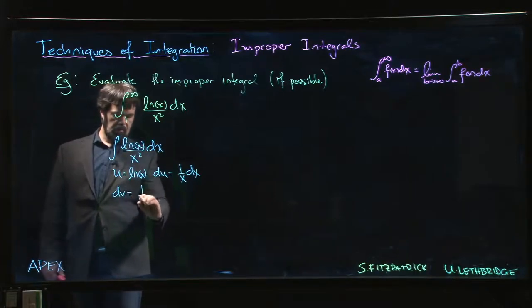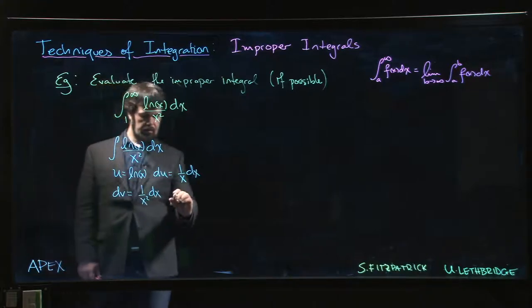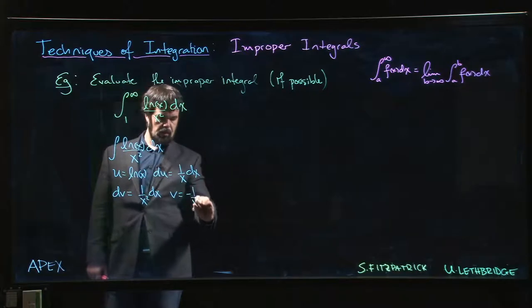dv then is 1 over x squared times dx, and integrating that means that v needs to be minus 1 over x.